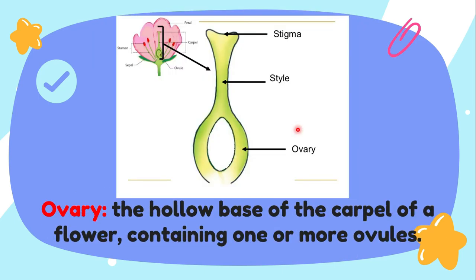Now we have the ovary. The ovary is the hollow base of a carpel of a flower, containing one or more ovules. If you see a flower from inside, this is what you're going to see. The ovary is this part of the flower.